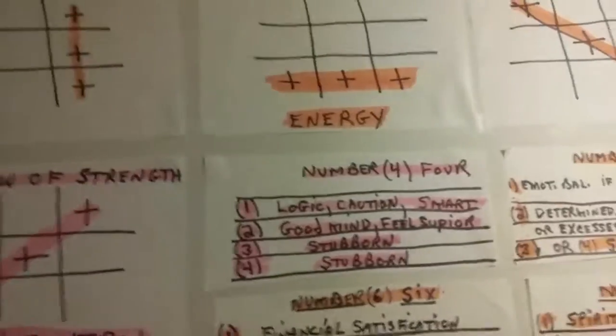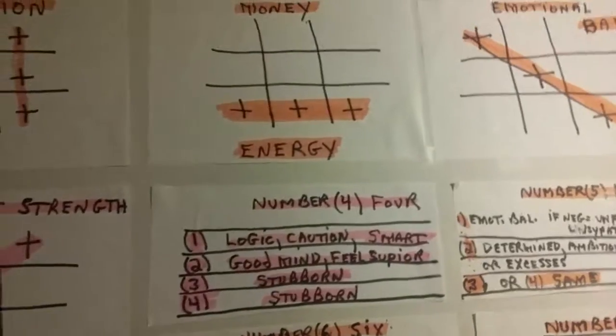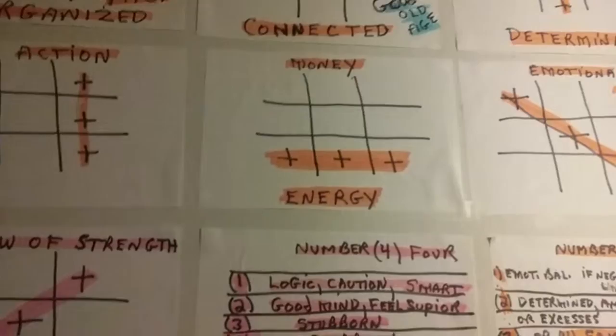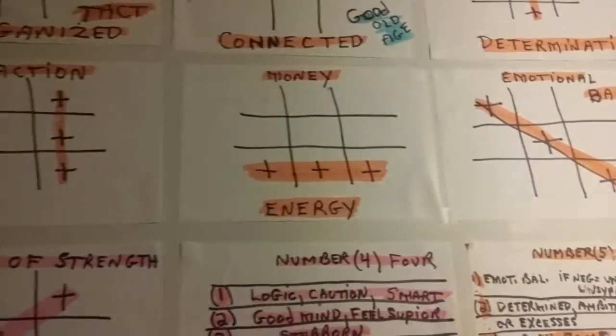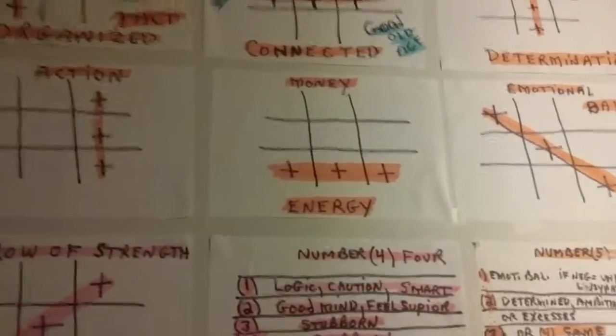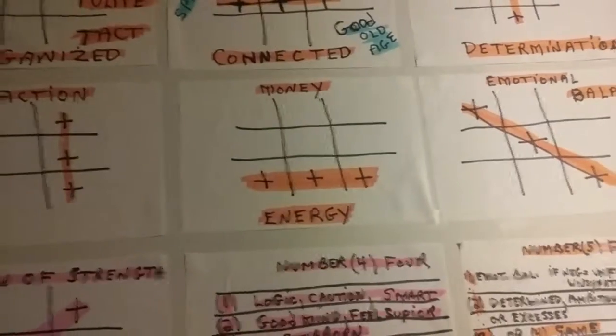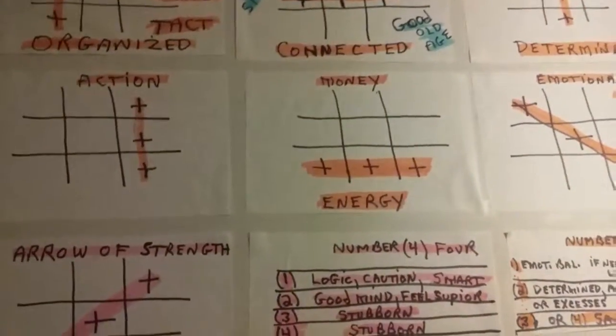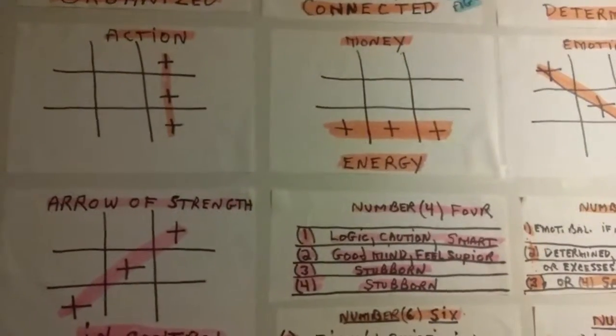Now, when somebody is in a period that is similar to their achievement, which is the day and the month added up together, when they have a four achievement and they're in a four cycle, it usually gives them an opportunity to do something that they really want. So this is lesson 10.